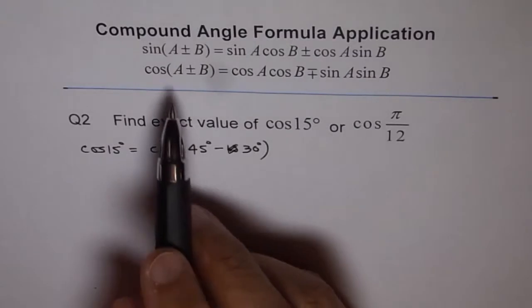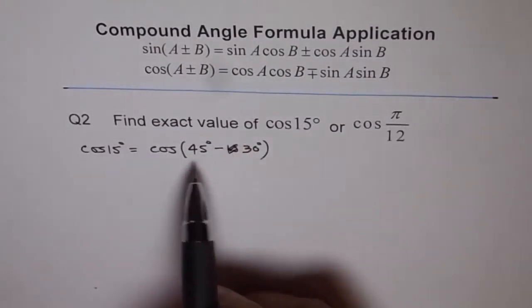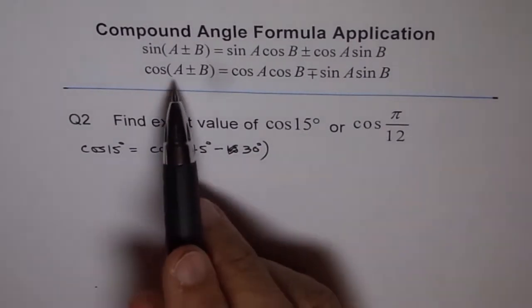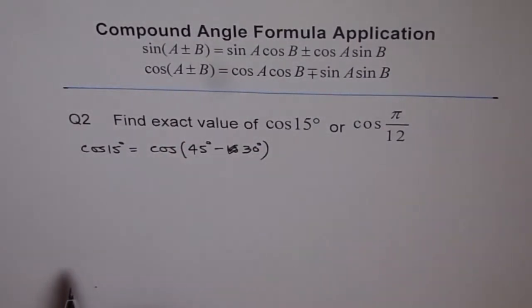So once I know that, I can use my compound angle formula and figure out what is the value of cos of 15. So that's the beauty of this compound angle formula. It helps us to figure out and evaluate cosines and sines or the trigonometric ratios for different angles.